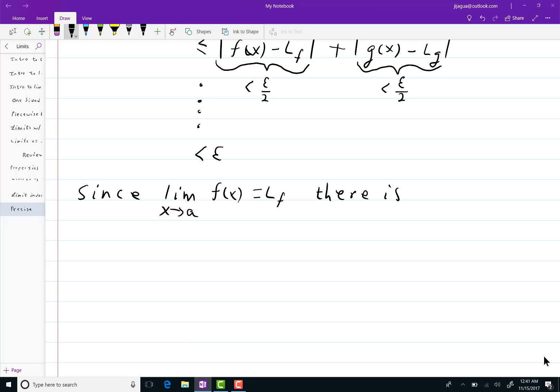there is a delta sub 1 greater than 0 with 0 less than the absolute value of x minus a less than delta 1, and then implying that the absolute value of f of x minus l sub f is less than epsilon over 2.